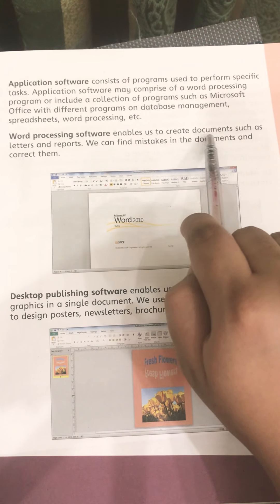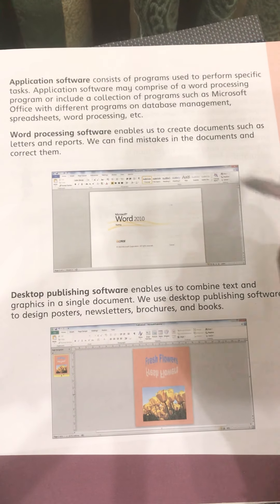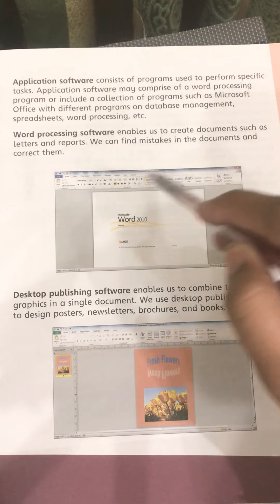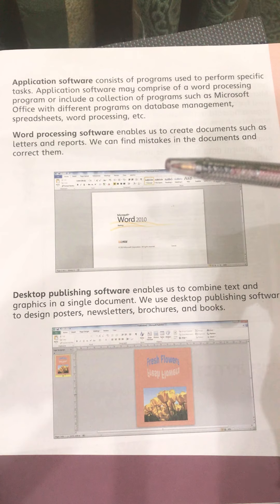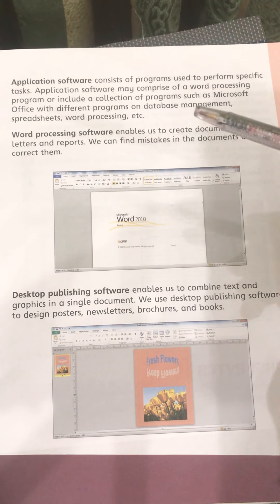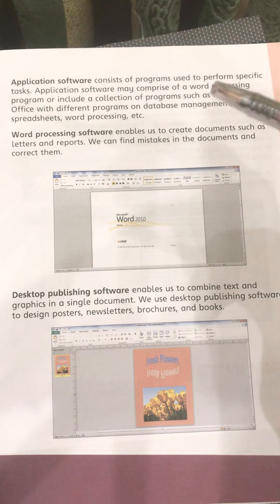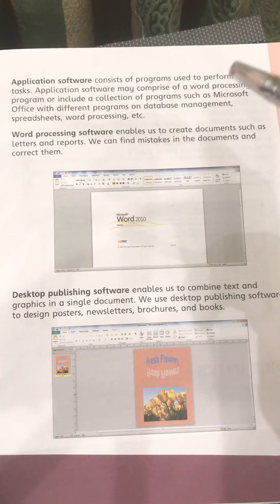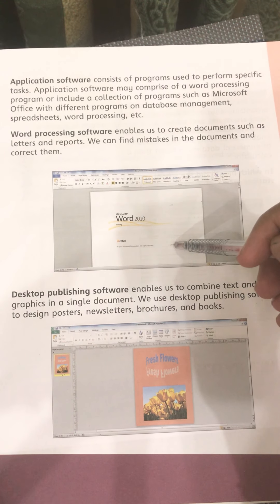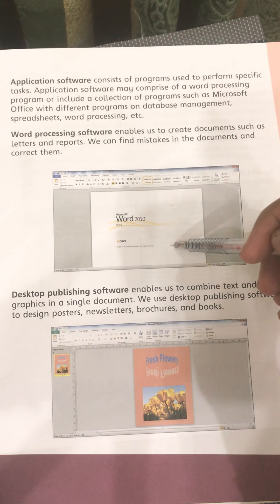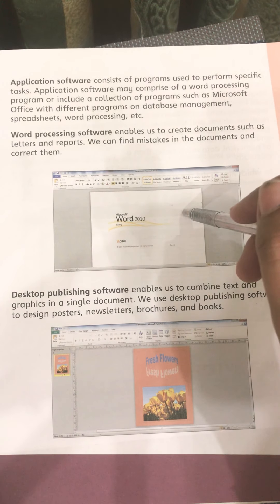Word processing software enables us to create documents such as letters and reports. We can find mistakes in documents and correct them. As you can see in this window, this is related to Microsoft Word 2010. There are different versions of Microsoft Word, and every version of Microsoft Office — including Excel and PowerPoint — is usually updated and upgraded with different options and features. Nowadays we are using Microsoft Word 2014 and even newer versions are available.